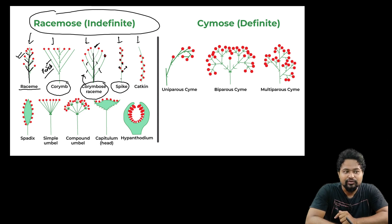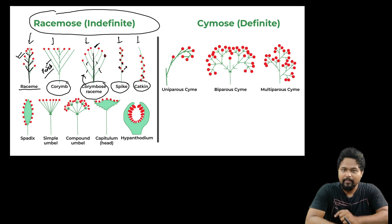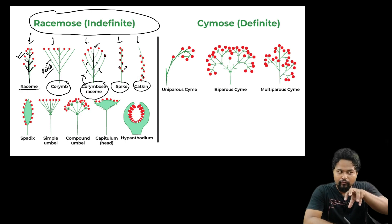Spike and catkin are also types. Spadix is a spike but also with a pendulous arrangement.